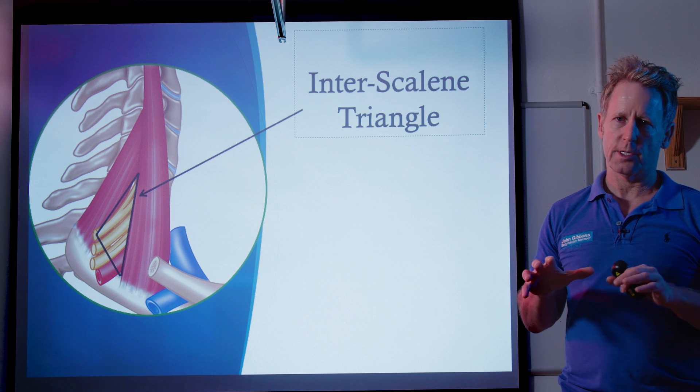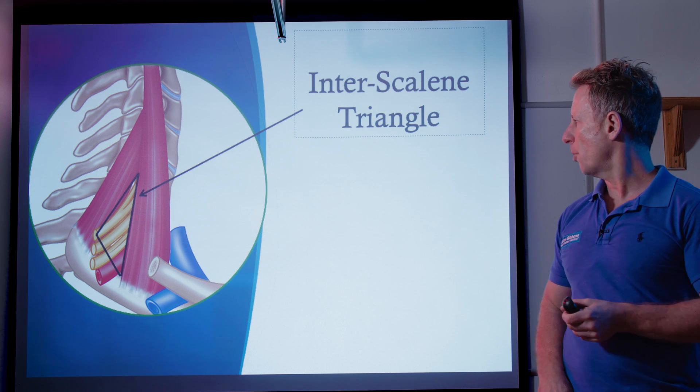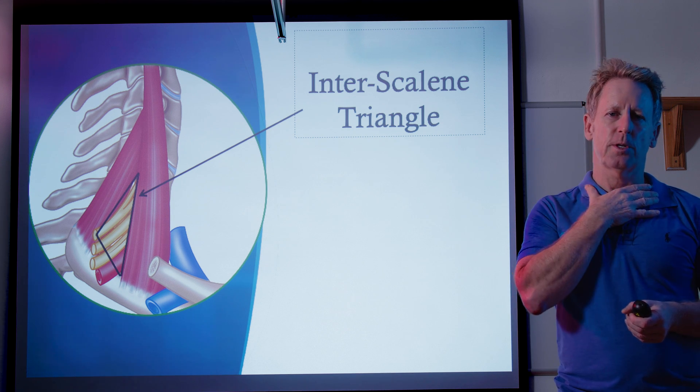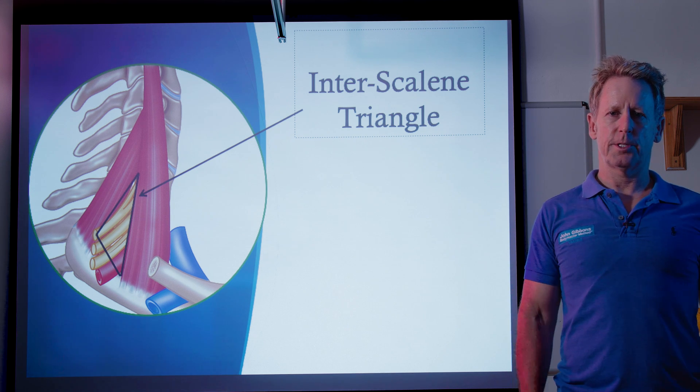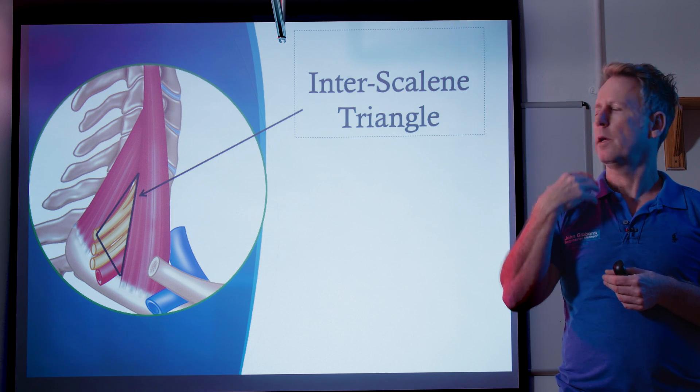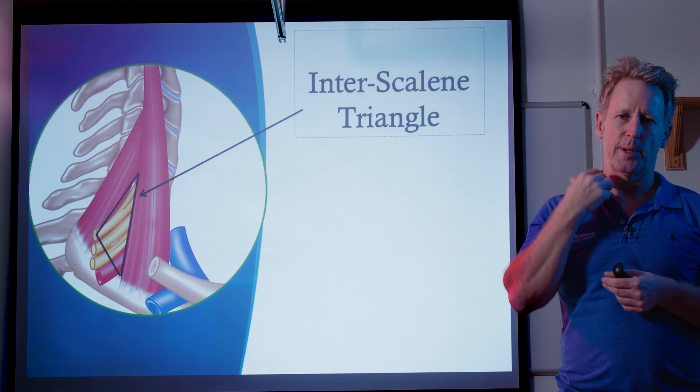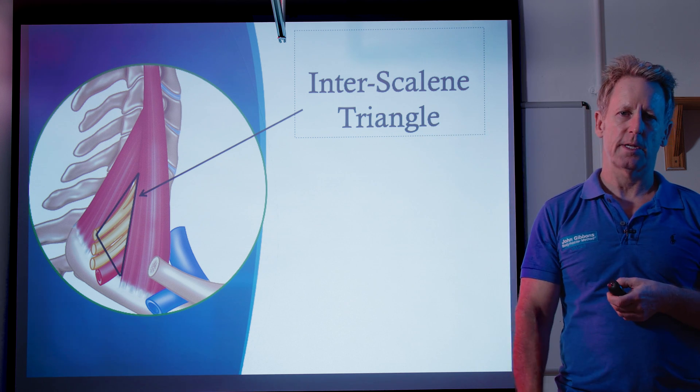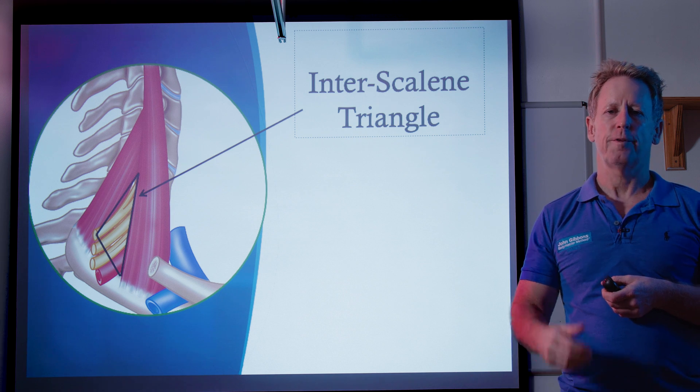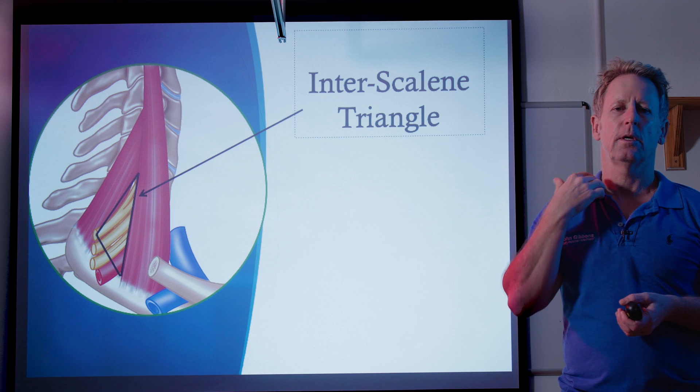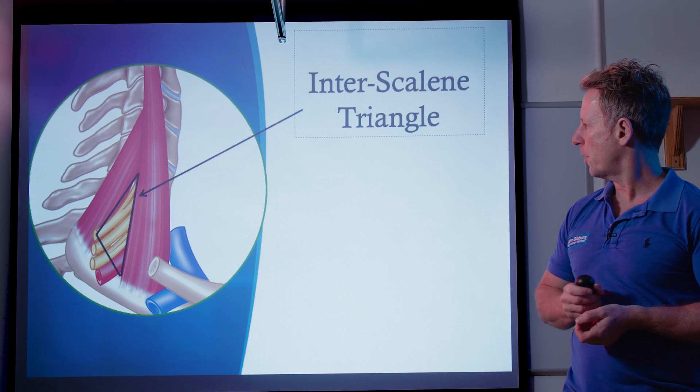So there's five major causes of thoracic outlet syndrome, as we've briefly mentioned. A lot of time it's positional, so maybe the shoulder's positioning, maybe the arm position, maybe even the neck. They might even take a deep breath in, and that first rib might give you some altered sensation to the arm. So if they do have changes, then it might be worth considering having a look at the thoracic outlet.